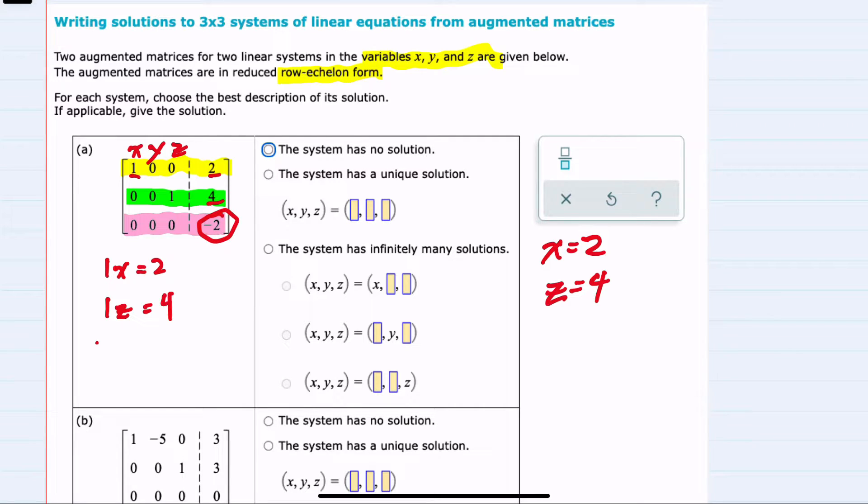With all of the variables having zero coefficients, that would mean that zero equals negative 2. And since this is not a true statement, that means our system of linear equations does not have a solution.